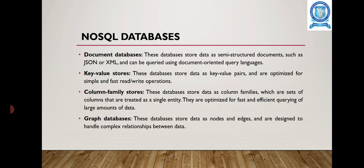NoSQL databases are generally classified into four main categories. The first one is the document database, the second one is the key-value store, the third one is the column family store, and the fourth one is the graph database. Document databases store data as semi-structured documents such as JSON or XML format, and can be queried using document-oriented query languages.